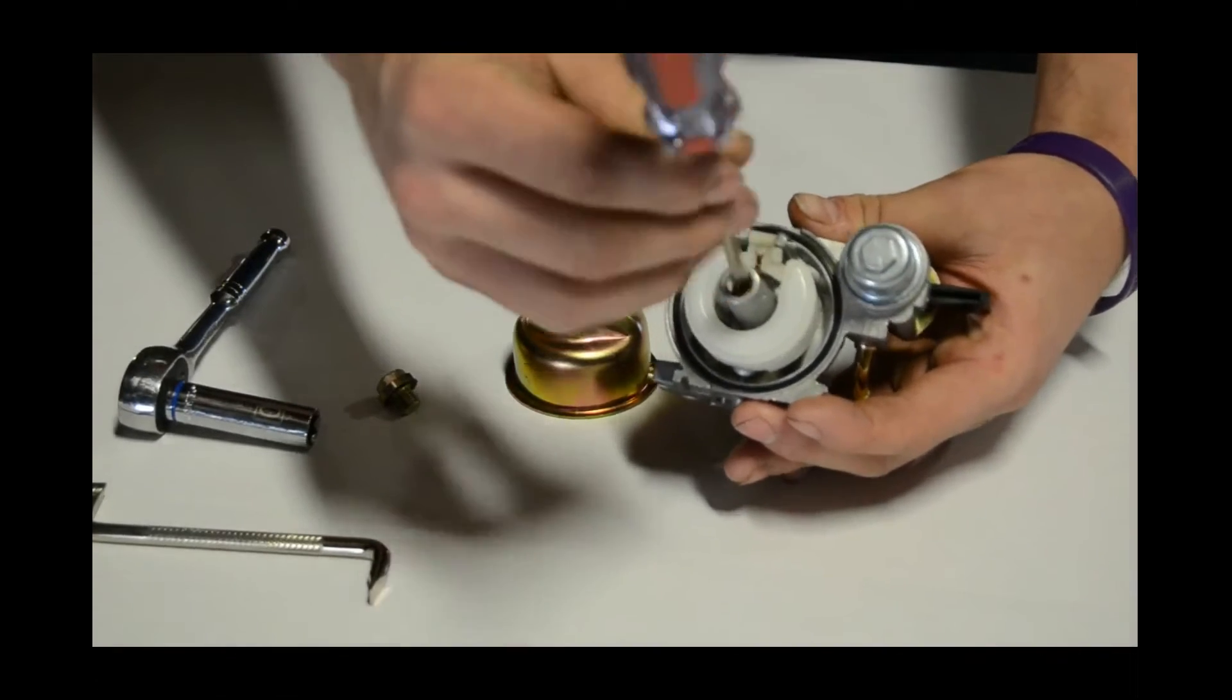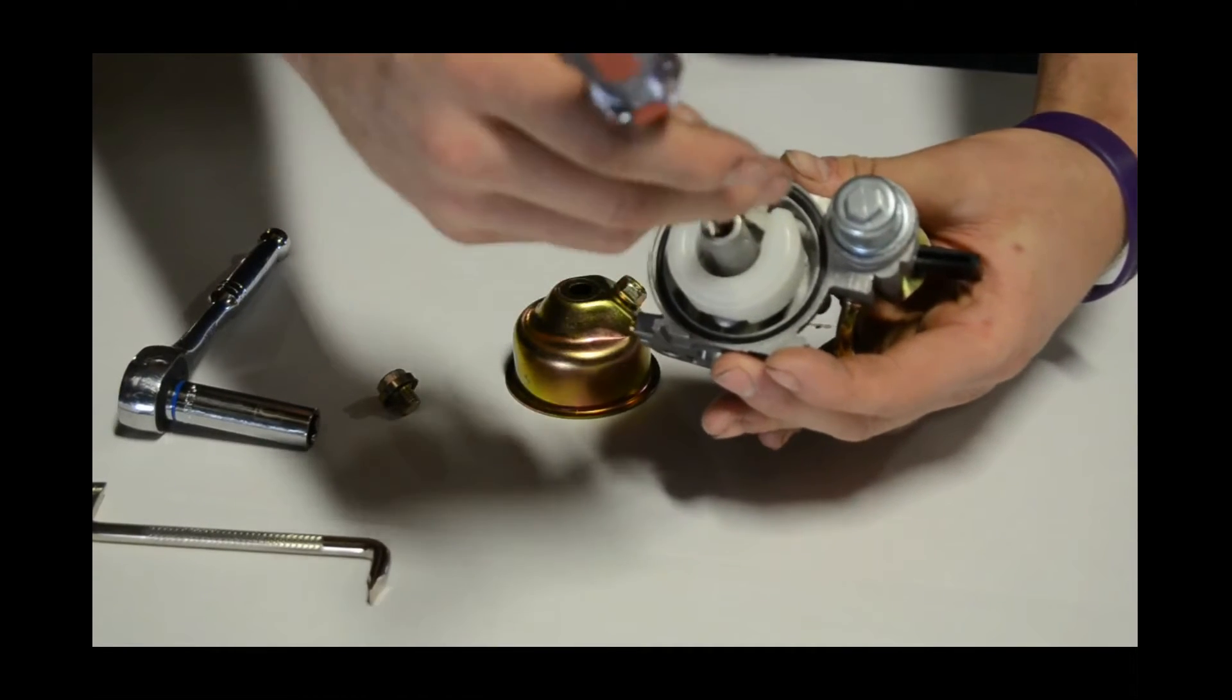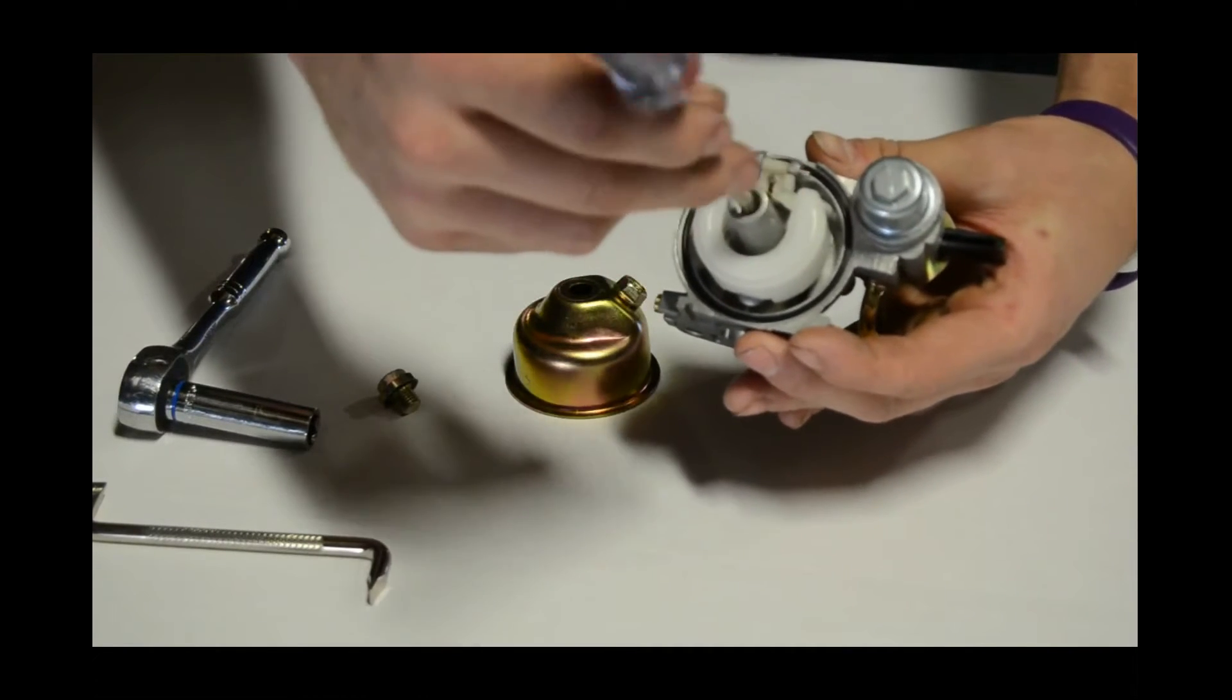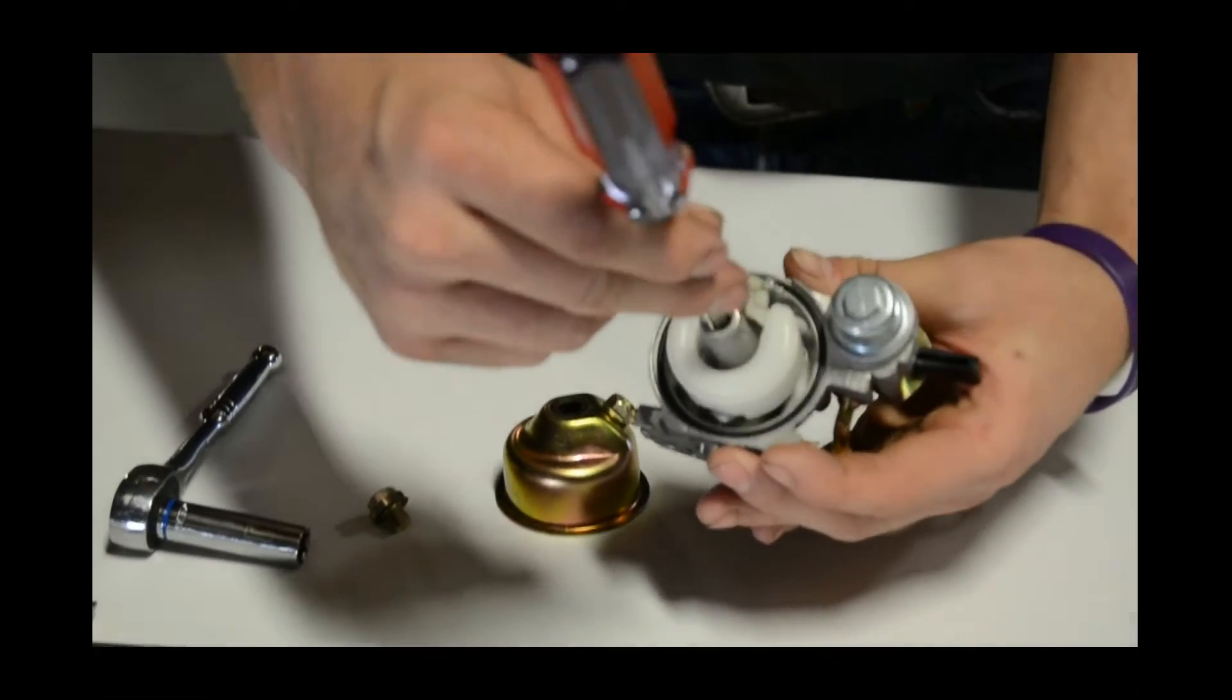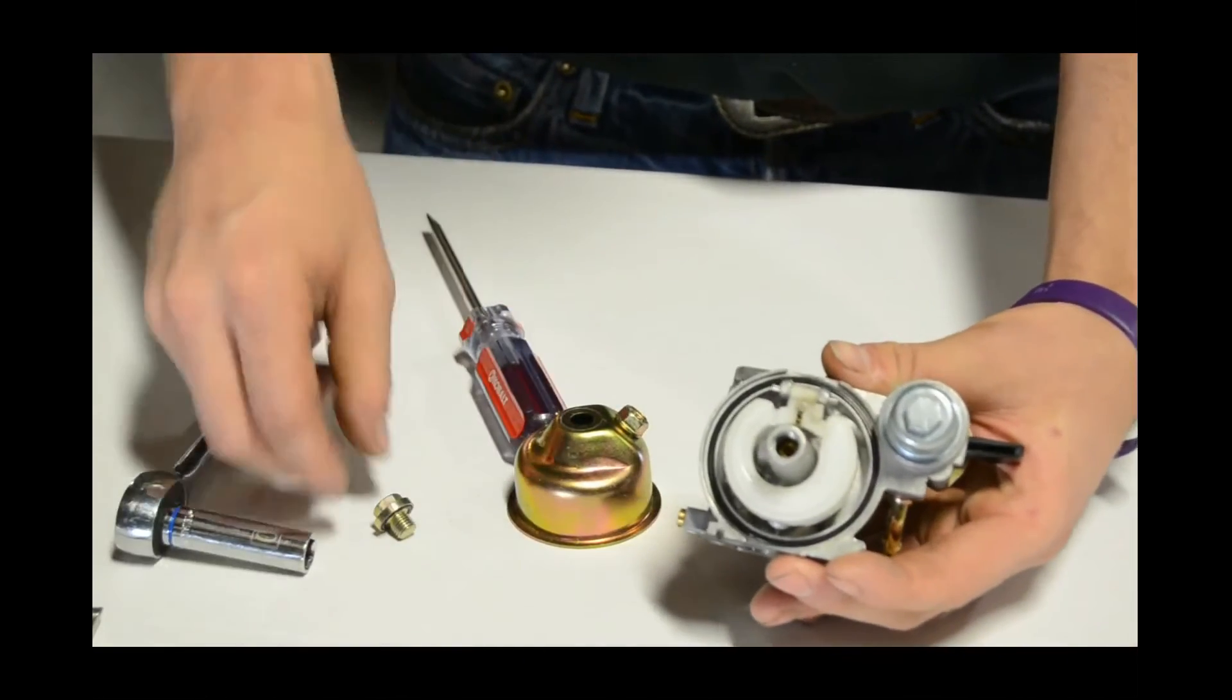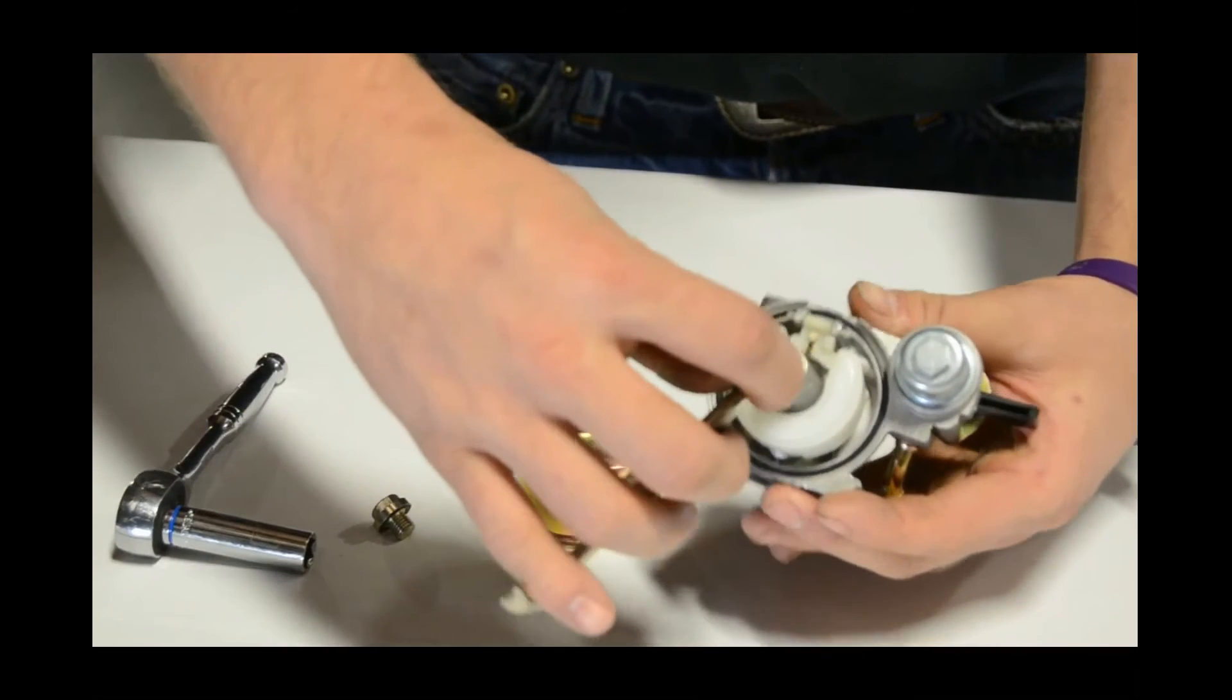Now, as you tighten this up, be sure that you're not over-tightening it. Just snug or maybe just a hair past snug is sufficient. If you do over-tighten this, you run the risk of cracking the carb body.